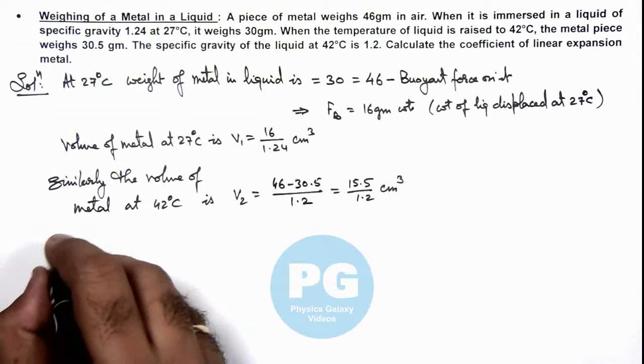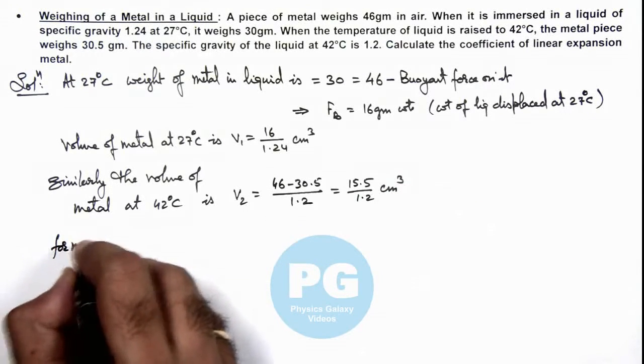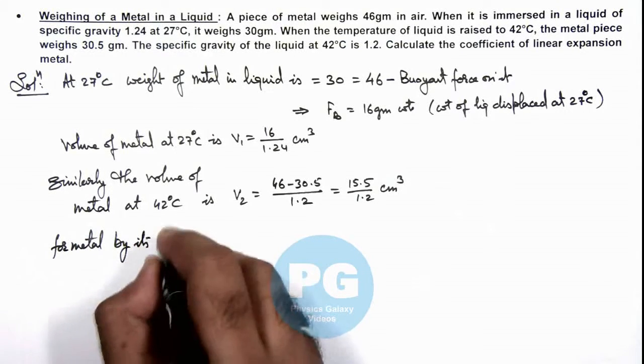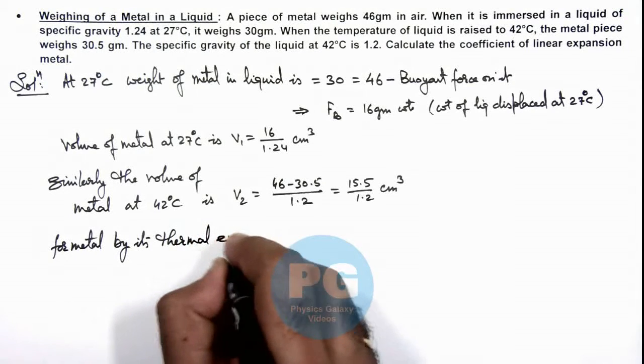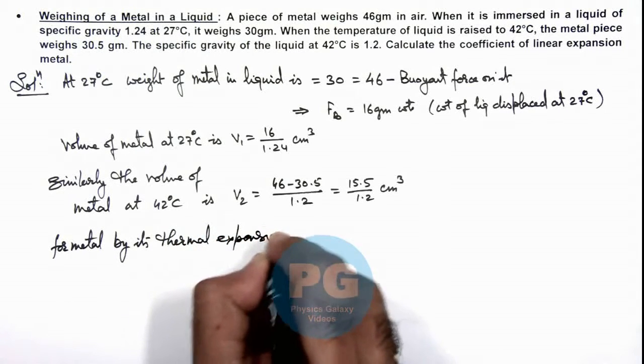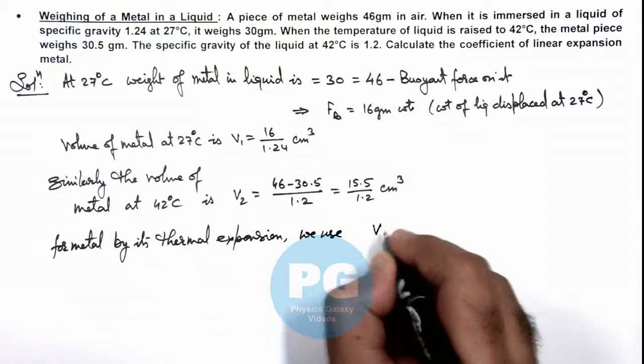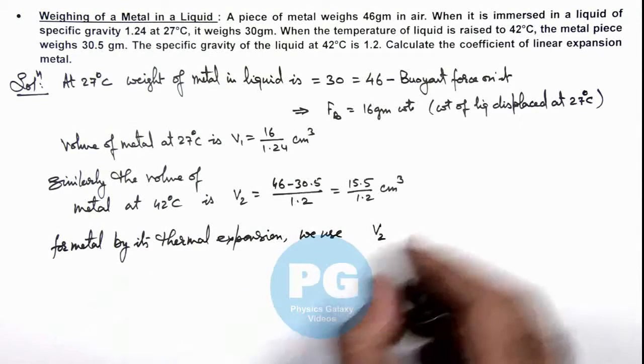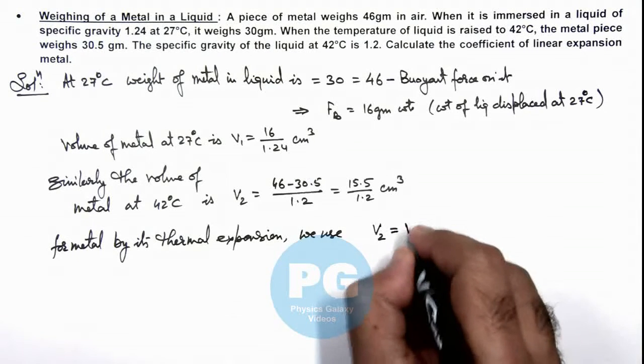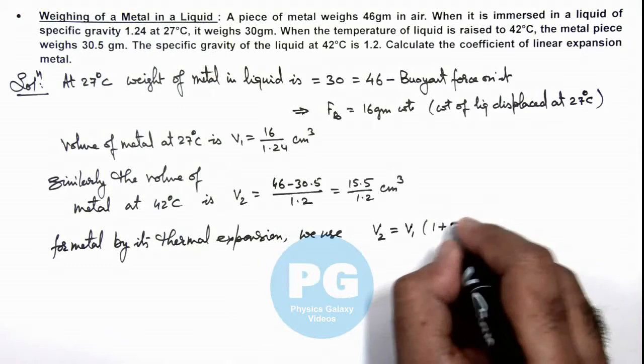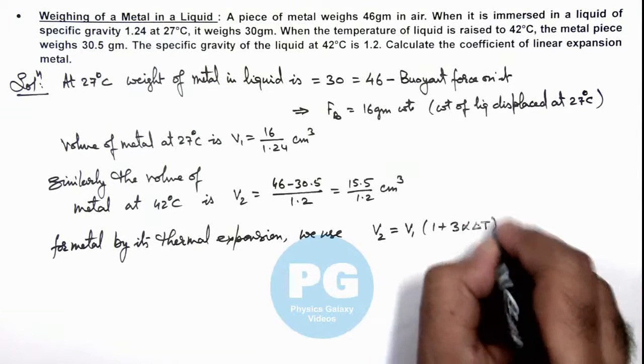And for metal, by its thermal expansion, we can use the value of volume V2, which is at 42 degrees Celsius, should be equal to V1 multiplied by 1 plus 3 alpha of metal multiplied by delta T.